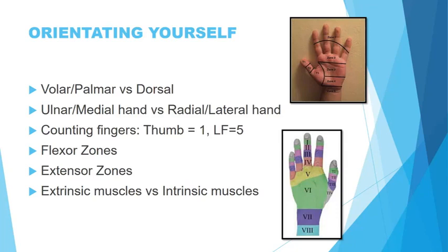If you turn your hand around, if you pronate it and you look at the nail side, that's the dorsal side of the hand. Now moving on to the ulnar or medial side. Remember, we are looking at anatomical position — where they stand with their thumbs outward. So the ulnar side is where the ulnar bone runs. The radial side is on the side where the radius bone is, lateral as well. When we count fingers, we start with the thumb as number one.